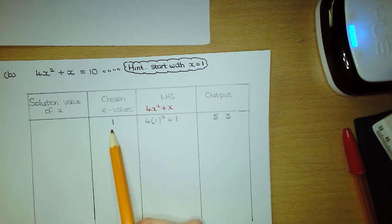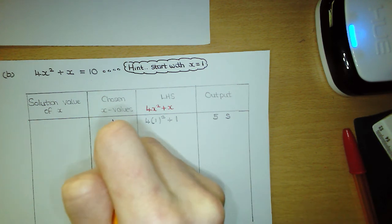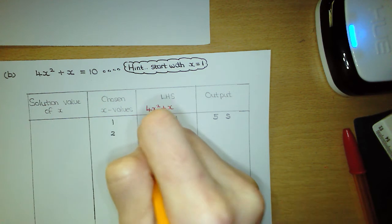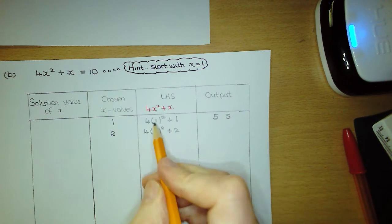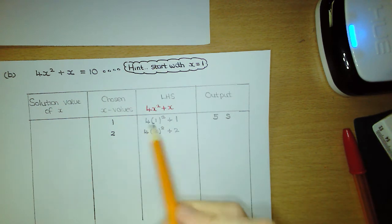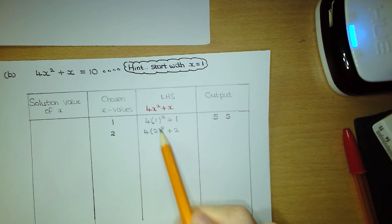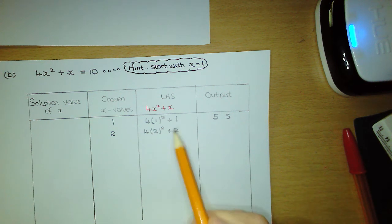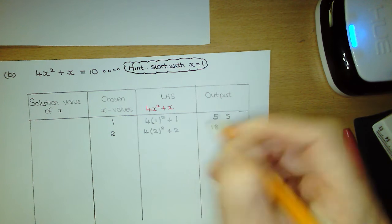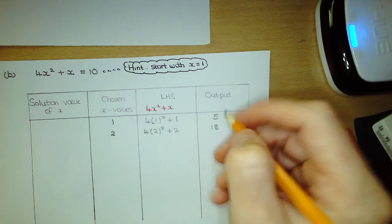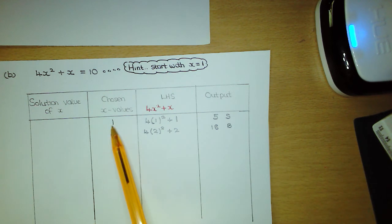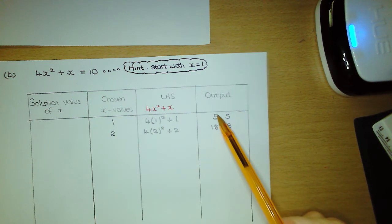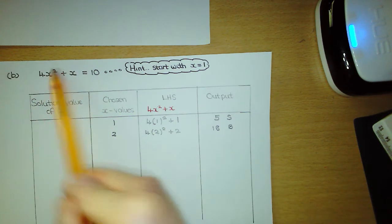We've got an output of 5 that's smaller than the target number. So let's pick the next whole number value of x, which is 2, and chuck it into the left hand side. 2 squared means 2 multiplied by itself, which is 4; times 4 is 16, plus 2 is 18. This time the output value is bigger than the target number, so put a B beside it. We've now established the gap: the solution value lies between 1 and 2, because the target number of 10 lies between 5 and 18.